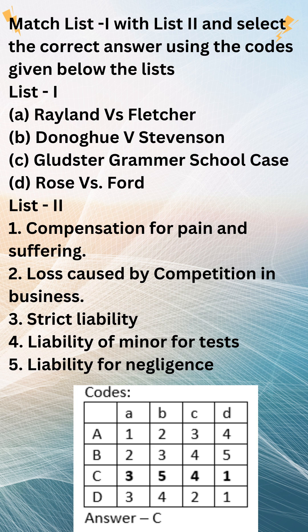There are a number of exceptions to the rule in Rylands v. Fletcher. For example, the rule does not apply to natural uses of land, such as agriculture and forestry. The rule also does not apply to cases where the plaintiff has consented to the defendant's use of the land, or where the plaintiff's own negligence has contributed to the damage. The rule in Rylands v. Fletcher is an important part of English tort law and helps to protect people from the dangers posed by non-natural uses of land.